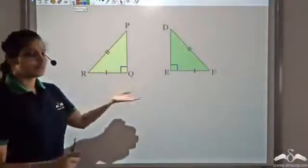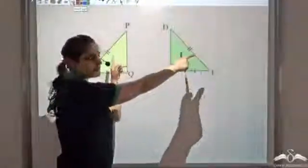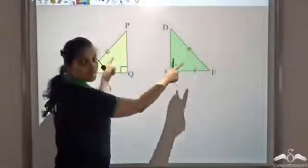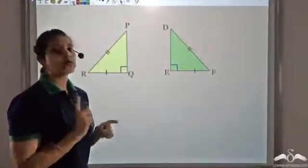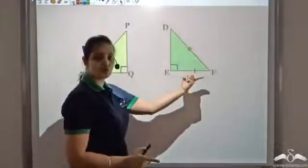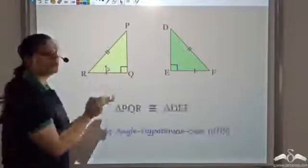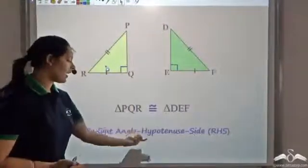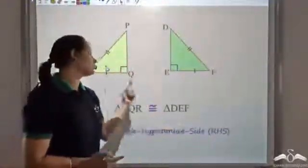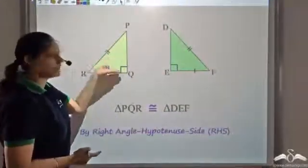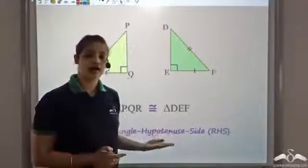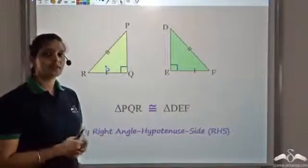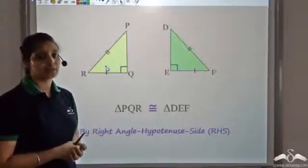In right triangles there is a special case. If the hypotenuse PR equals hypotenuse DF, and one more side RQ equals EF, then the triangles are congruent. This holds only in right triangles. Since we have a right angle, the same hypotenuse, and one equal side, we can say the triangles are congruent by RHS — right angle, hypotenuse, side. These were the different sufficient methods to show that triangles are congruent.